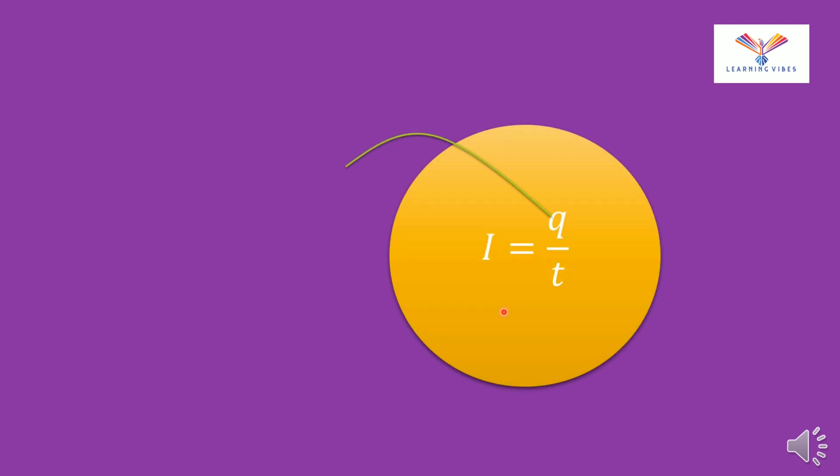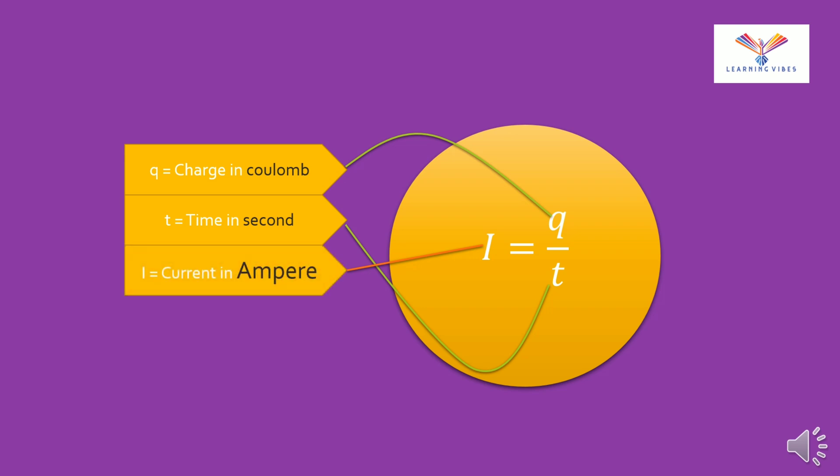I is equal to Q by T. This is the equation of current. By using this equation you can calculate the current. In this equation Q means charge and that can be measured in Coulomb. Then the next term is T. T means time and time can be measured in seconds. And the third is current. The current is measured in ampere.